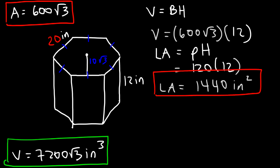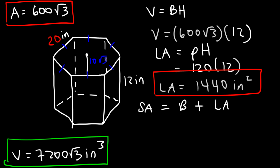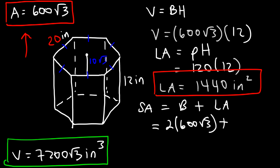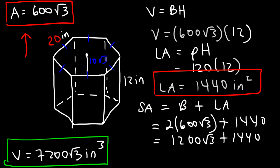Now we can calculate the total surface area, which is the area of the base plus the lateral area. Keep in mind you have the top base and also the one on the bottom, so we need to multiply the base area by 2. The total area of the bases is 2 times 600 square root 3, and the lateral area is 1440. So the exact answer is 1200 square root 3 plus 1440, which is approximately 3,518 square inches for the total surface area.